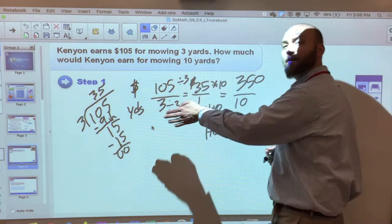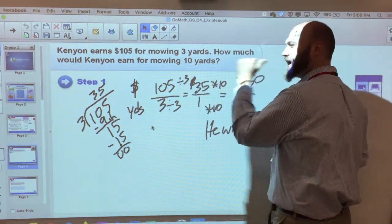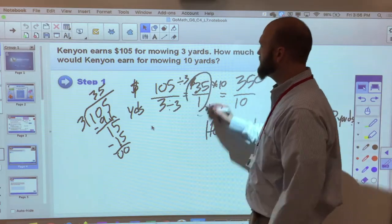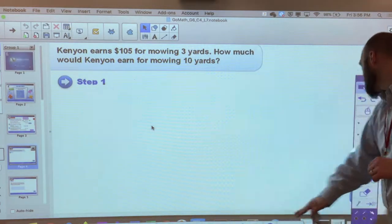So I took my original value, and I couldn't easily just transfer it into the other value. So I went down to a unit rate of one. And from there I could jump up to the next one. So let's try one more.